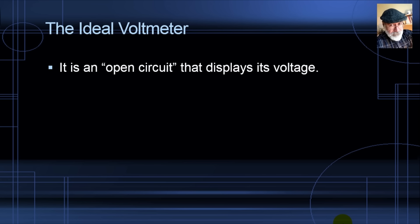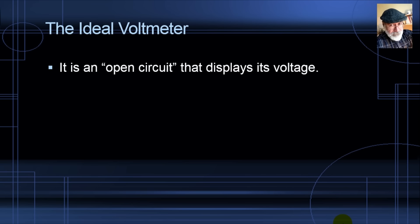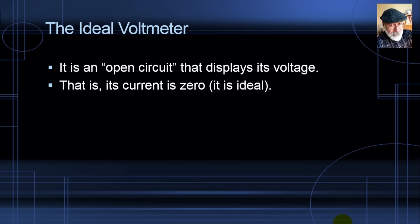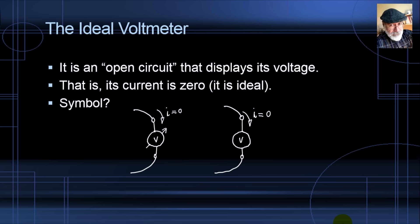The ideal voltmeter is an open circuit that displays its voltage. The internal resistance of an ideal voltmeter is infinity, and its current is zero. The current through an ideal voltmeter is zero and its internal resistance is infinity. A real voltmeter is not quite like that, but it still has a huge internal resistance — somewhere around several hundreds of millions of ohms — so the current is not quite zero, but it's very, very tiny.